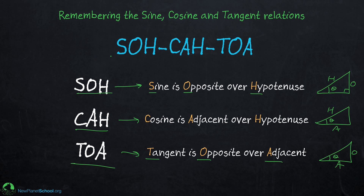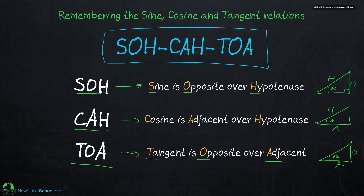If you can simply remember this phrase — this funny-sounding thing, SOHCAHTOA — then you can remember for the rest of your life these three trigonometric definitions and how the angles are related to the sides of a right triangle. And that's basically it.